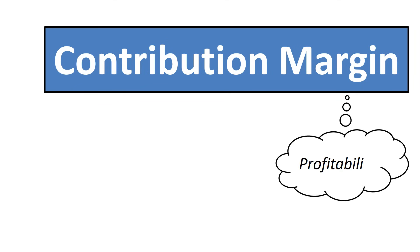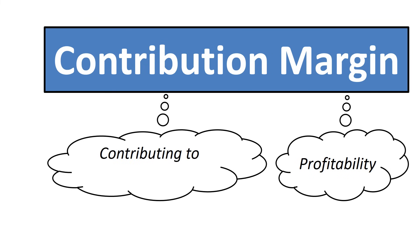To summarize: the word margin indicates that contribution margin is a term describing profitability. The word contribution is related to contributing to covering fixed costs. Once contribution margin has fully covered fixed costs, a company can turn profitable.